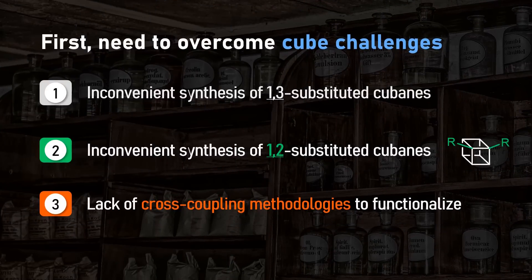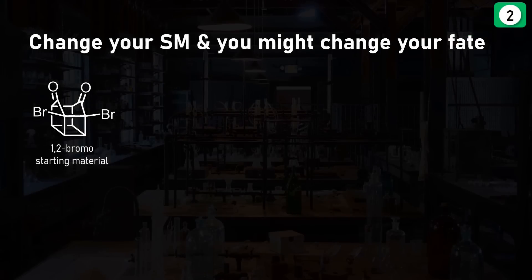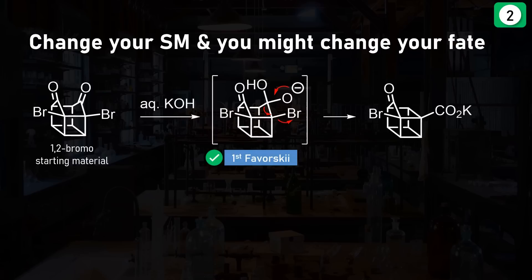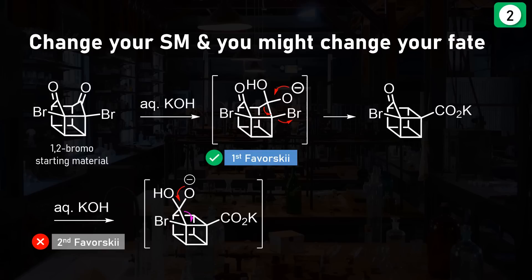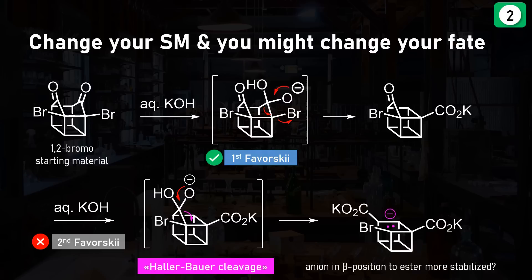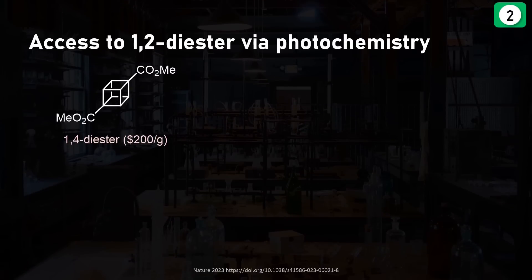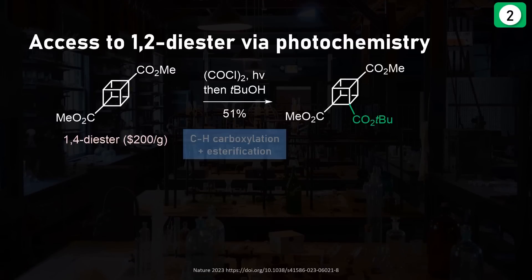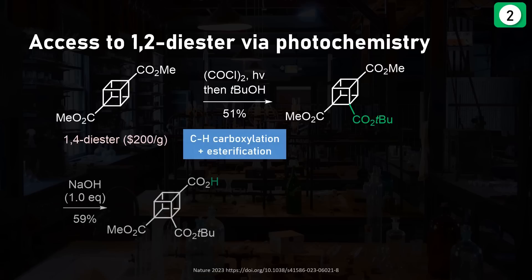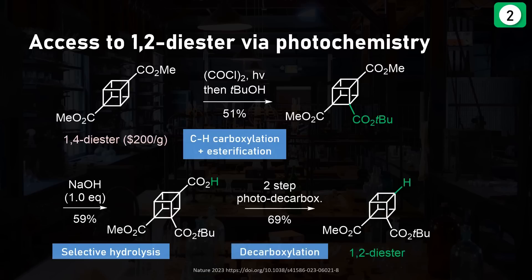Because the alpha position of the ketone is not enolizable due to Bredt's rule, this is actually a quasi-Favorskii reaction that proceeds through concerted migration of the alkyl bond to displace the bromide. A final double methylation rounds up this synthesis of the 1,3-diester. To access 1,2-substituted cubanes, you would start with a 1,2-bromo starting material. However, the second Favorskii reaction is stopped by a competing Haller-Bauer cleavage, as the second ester in a beta position potentially stabilizes the resulting anion. The workaround uses the commercially available 1,4-diester in a light-mediated C-H carboxylation to introduce another ester in the 1,2 arrangement, followed by selective hydrolysis with one equivalent of sodium hydroxide and decarboxylation to give the desired 1,2-diester.